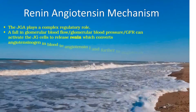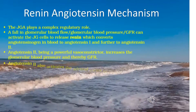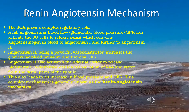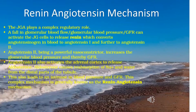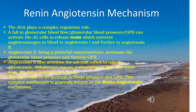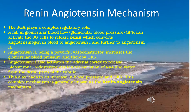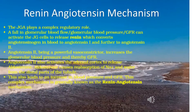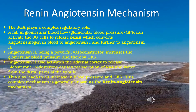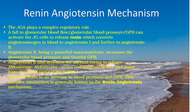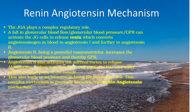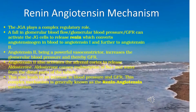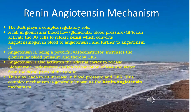Low glomerular blood pressure activates JG cells to release renin, which converts angiotensinogen in blood to angiotensin 1 and further to angiotensin 2. Angiotensin 2 is a powerful vasoconstrictor that increases glomerular blood pressure and GFR. Angiotensin 2 also activates the adrenal cortex to release aldosterone, which causes reabsorption of sodium ions and water from the distal parts of the tubule, leading to an increase in blood pressure and GFR. This complex mechanism is generally known as the renin-angiotensin mechanism.